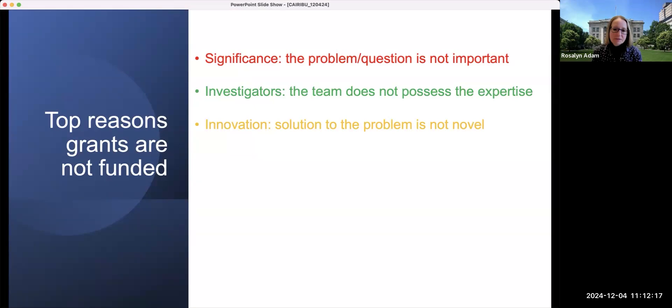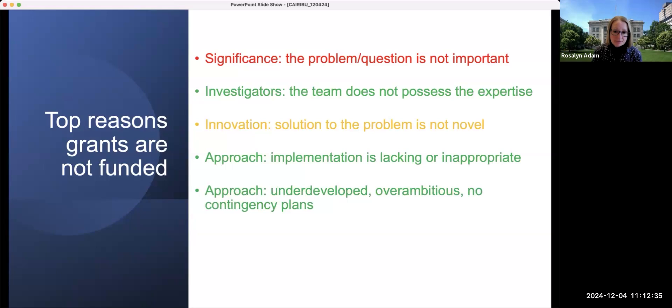Innovation may be a problem that the solution, the methodology that you're going to take to address the problem under consideration is not novel. The approach implementation is lacking or inappropriate. The approach may be underdeveloped. It might be overambitious. Or you may have written the grant with the full expectation that everything you do and propose will actually work first time. And as experimentalists, we know that this is generally not the case. So you have failed to include contingency plans if things don't proceed as planned. There may be concerns about your environment, that you have insufficient resources at your disposal to complete the proposed studies effectively.